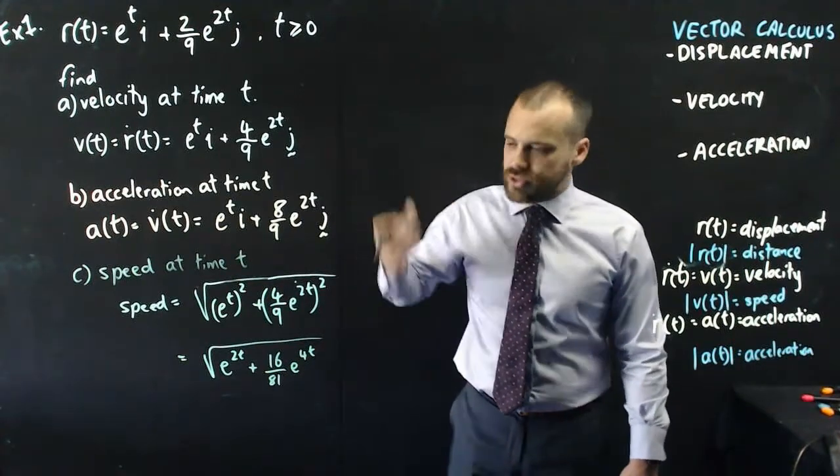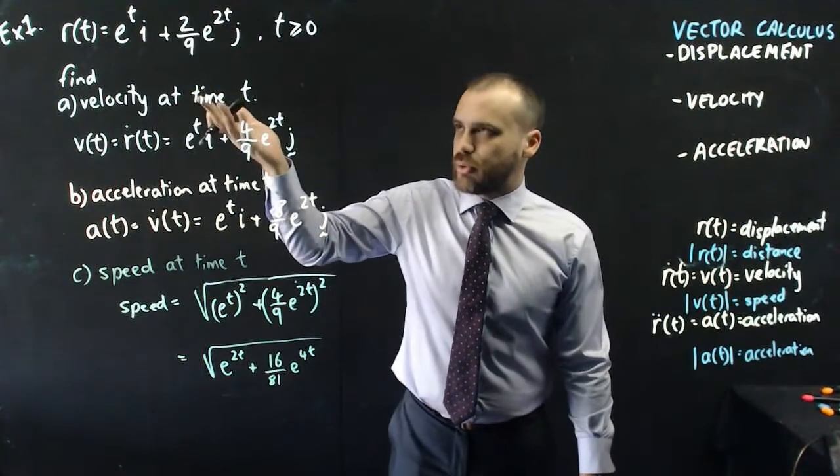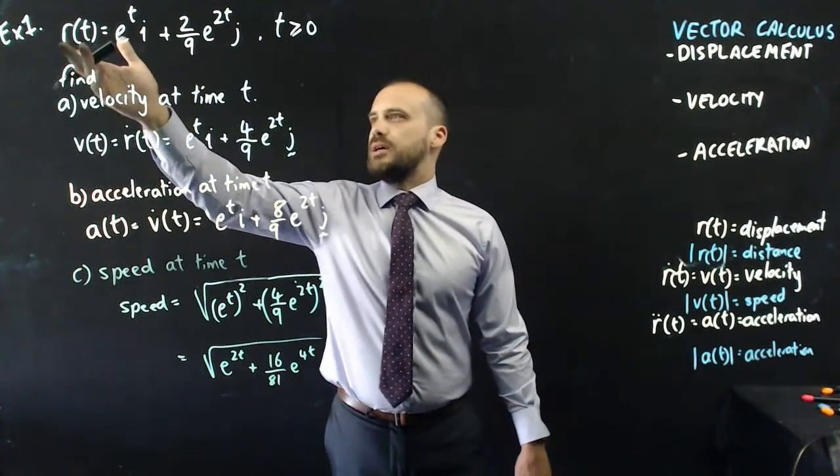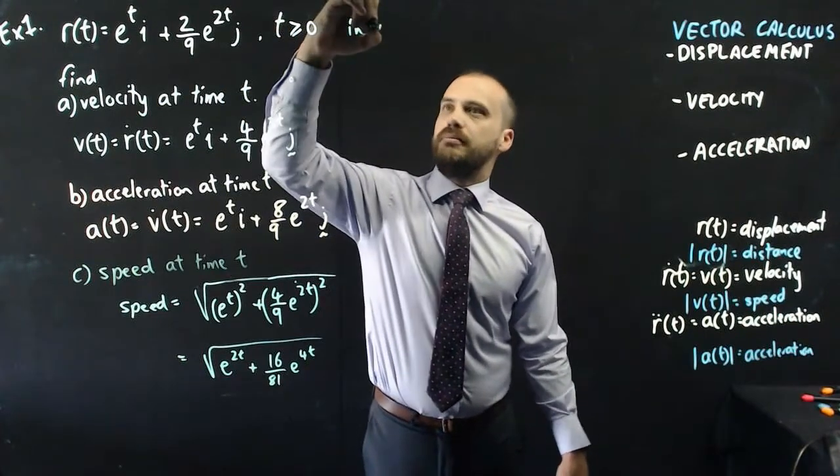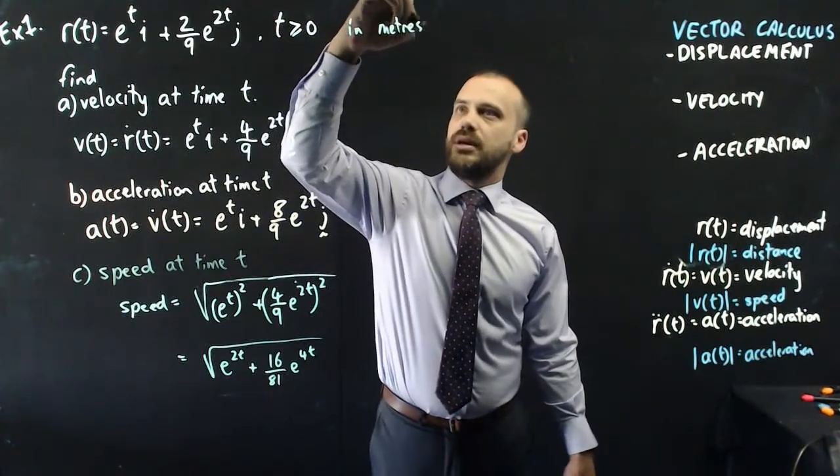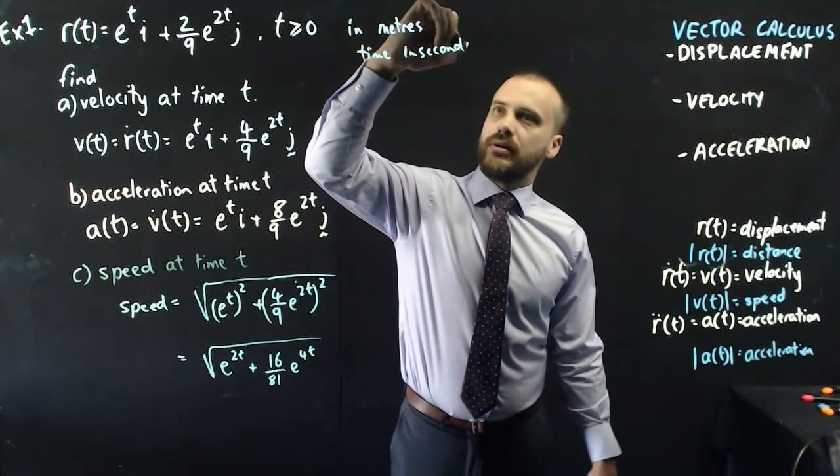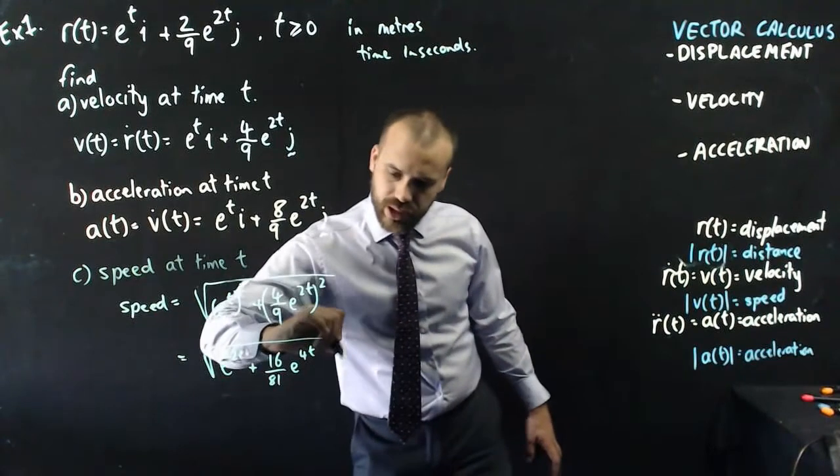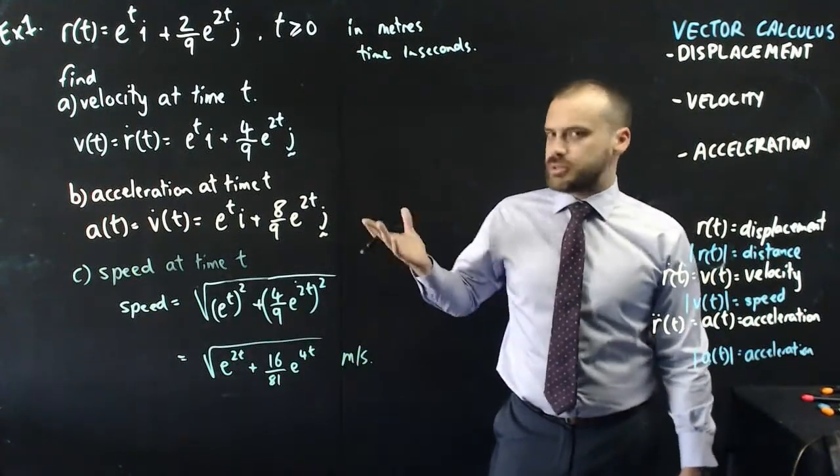Now, we probably should have units on at least the speed. You'd be told in the question. So, this should probably say displacement with respect to time in meters and time in seconds, which means that our speed would be in meters per second. All right, let's do another one.